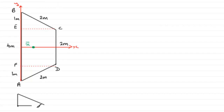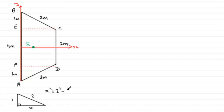By Pythagoras' theorem, drawing triangle BEC with BE = one meter and BC = two meters (the hypotenuse), we find: X squared equals two squared minus one squared, which is four minus one, equals three. So X equals root three. That gives us the height of the rectangle: EC and FD both equal root three meters.